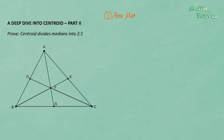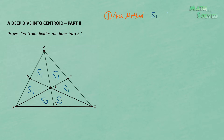Here in triangle ABC, we have three medians, and point F is the centroid. In the last video, we proved that these four triangles have the same area, and these two triangles at the bottom also have the same area. I left a question at the end of the last video: what's the relationship between S1 and S3? The answer is pretty simple — they are equal.